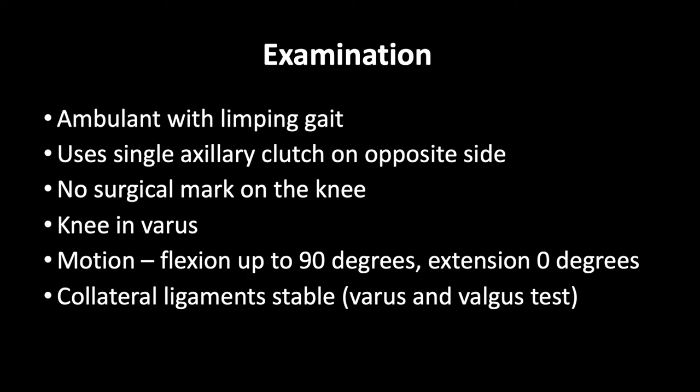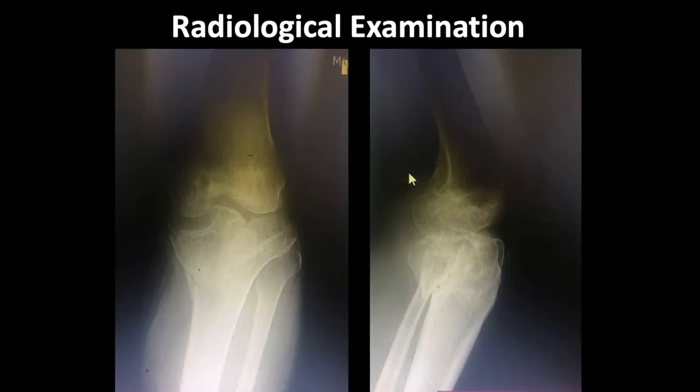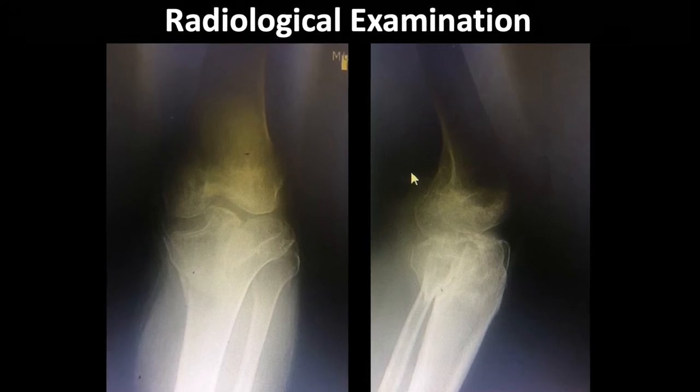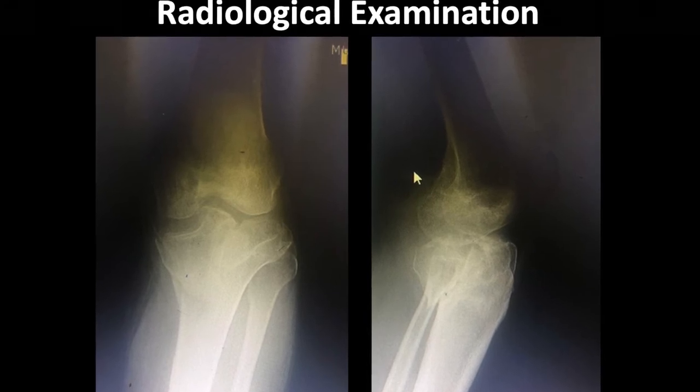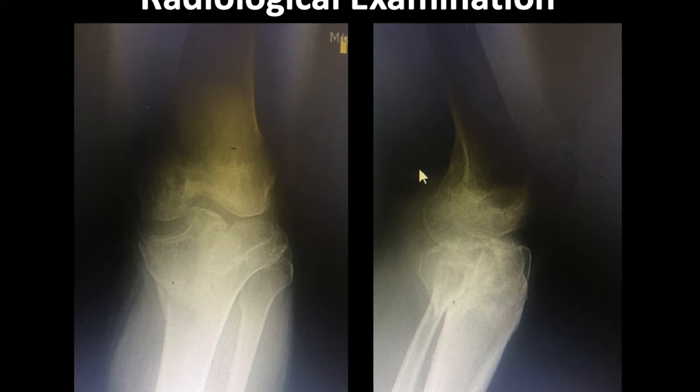During examination, the patient had a limping gait and was using a walking crutch on the opposite side. He had no surgical mark on his knee. The knee was in varus, with motion up to 90 degrees of flexion and full extension to zero. He had stable collateral ligaments. Anterior and posterior drawer tests were difficult to examine because of deformity and the long time since injury. Meniscal assessment was also difficult. Radiological examination was performed — what do the panelists see on these x-rays?